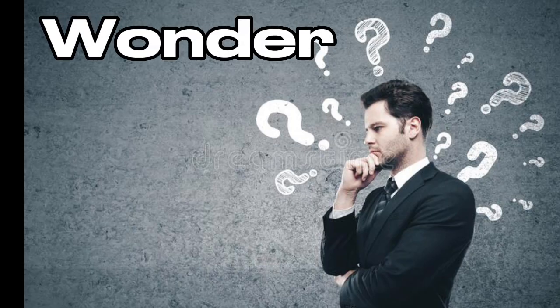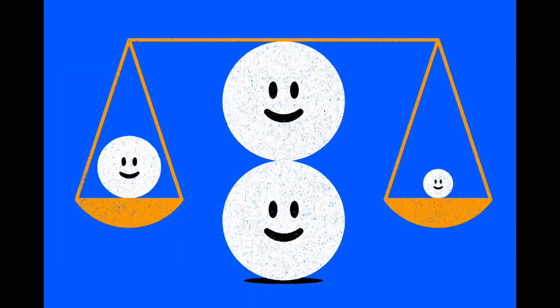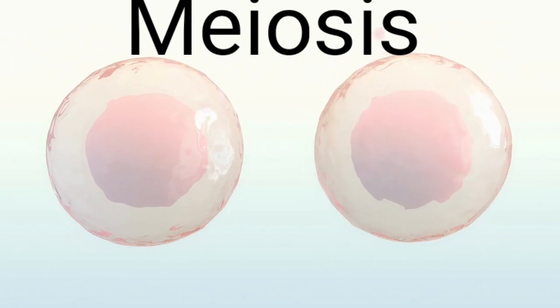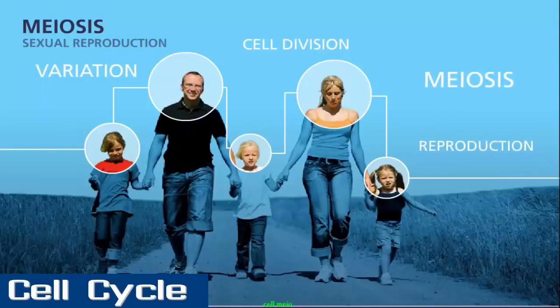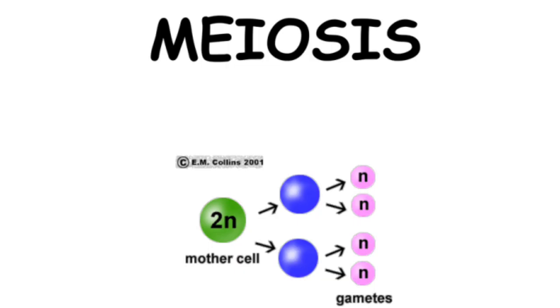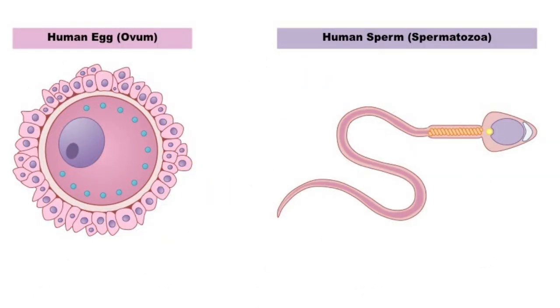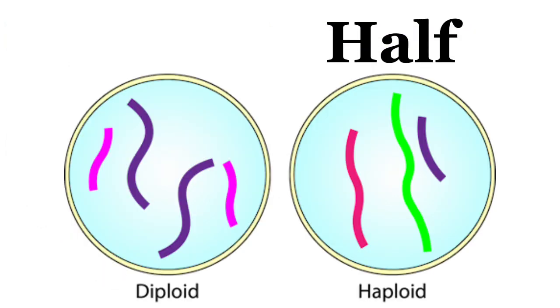Have you ever wondered why children from the same parents don't look exactly alike? This is because of genetic recombination that occurs during a type of cell division called meiosis. Meiosis is a type of cell division that only occurs in the testis and ovaries, producing sperm cells and egg cells that have just 23 chromosomes, which is essentially half the number of chromosomes found in a normal cell.